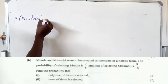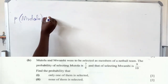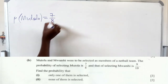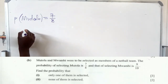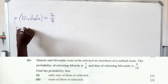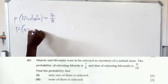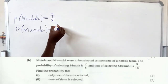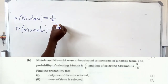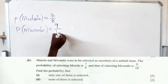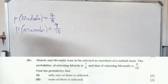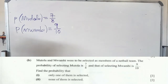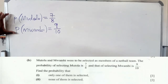The probability of selecting Muthola is 7 over 8, and the probability of selecting Mwami is 9 over 10. They say: find the probability of selecting only one person.